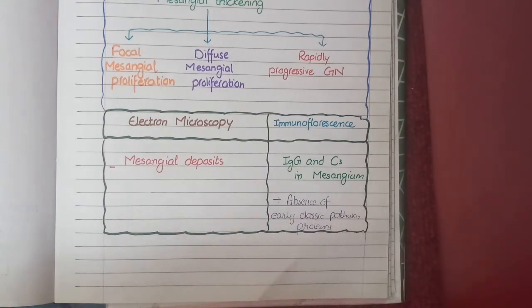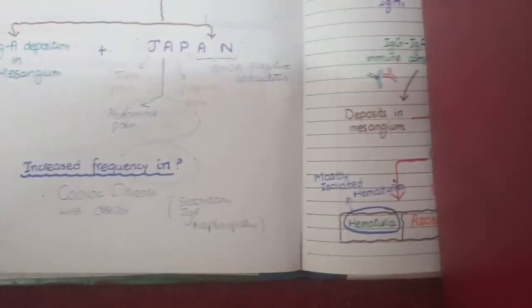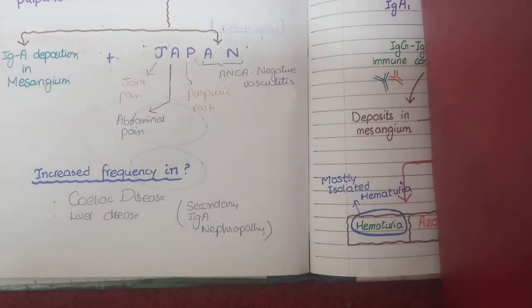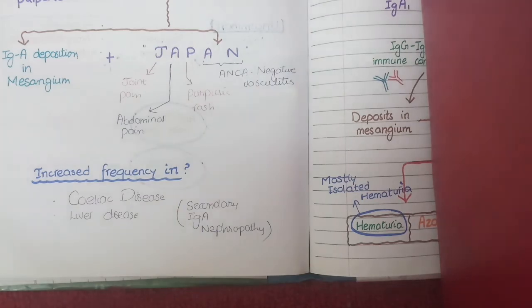Finally, IgA nephropathy is seen with increased frequency in people with celiac disease and liver disease. When IgA nephropathy occurs secondary to these conditions, it is called secondary IgA nephropathy. This concludes our discussion on IgA nephropathy.